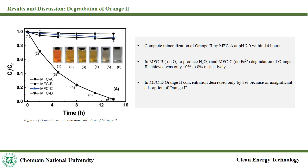Regarding degradation of orange 2 dye, the figure shows that microbial fuel cell A completely degraded orange 2 at pH 7 within 14 hours. Cell B only degraded 10% of the dye because there was no hydrogen peroxide produced. Cell C degraded 8% of the refractory because of no ferrous ions. Cell D degraded only 3% because of insignificant adsorption of orange 2 onto the cathode.